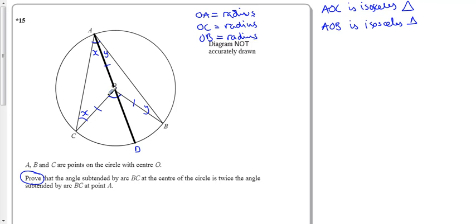So we can work out that this angle here, angle AOC is equal to 180 degrees minus 2X. This angle here, because it's 180 degrees in the triangle AOC, take off the two angles.